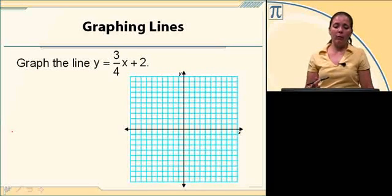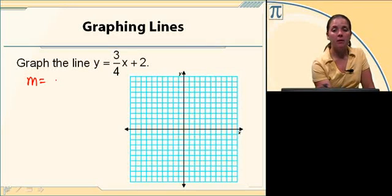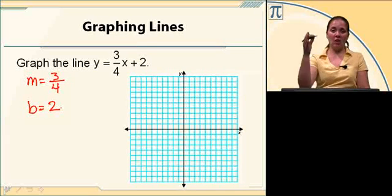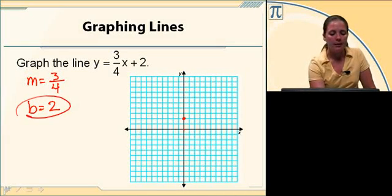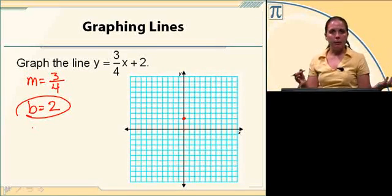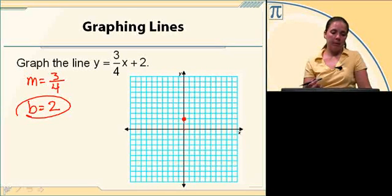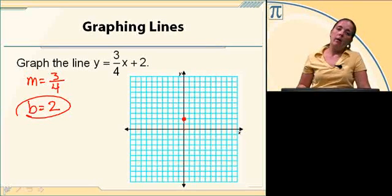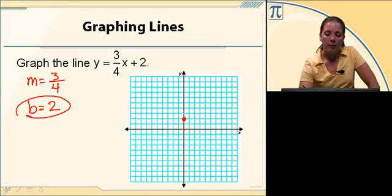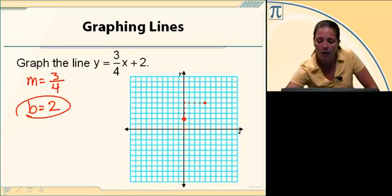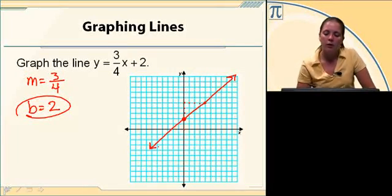Let's go ahead and graph the line Y equals 3 fourths X plus 2. This is slope-intercept form, so my slope is 3 fourths and B is 2, where the Y-intercept is 2. The B tells you where to start on the Y-axis — start at the origin and go up 2. Then from B, move in the direction of the slope: up 3, right 4. Go up 3 and over 4, and continue doing that. I suggest using a straight edge to connect those dots so that your line is a nice straight line.